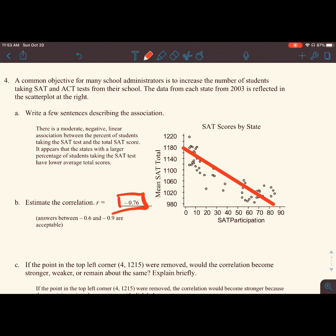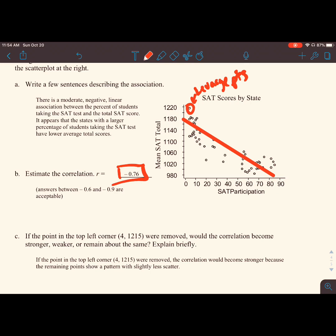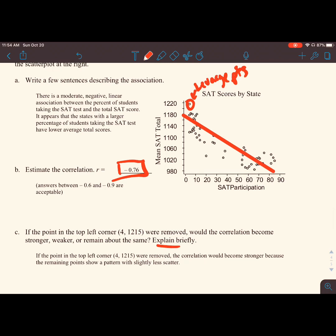If the point in the top left corner, 4 comma 1215, were removed, would the correlation become stronger, weaker, or remain the same? We have one of these outliers, or leverage points as we called it, which is reducing the strength of our correlation. If I didn't have to factor that one point in at the top, we'd have an even stronger relationship. So the correlation would become stronger because the remaining points show a pattern with slightly less scatter.